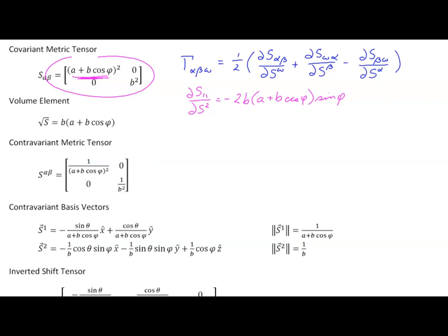To find the Christoffel symbols of the first kind, the only non-zero ones are those where the permutation of alpha, beta, and omega is some permutation of 2, 1, 1. So we're looking for gamma 2,1,1, or gamma 1,2,1, which will be the same as gamma 1,1,2, because the second two indexes are symmetric.